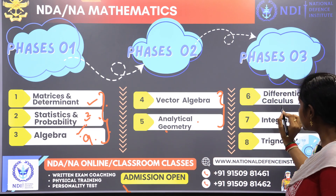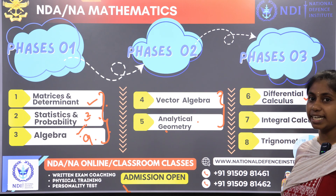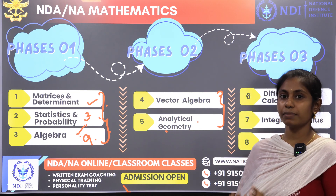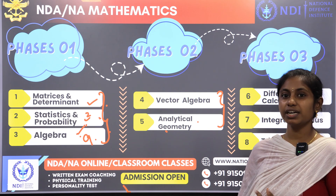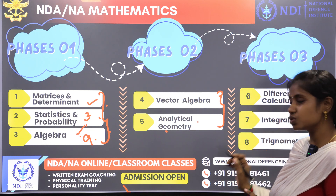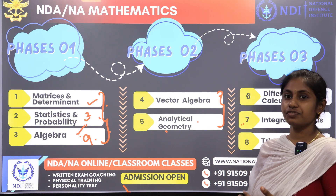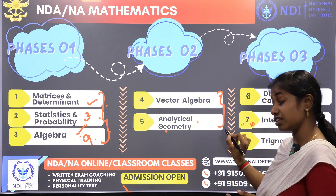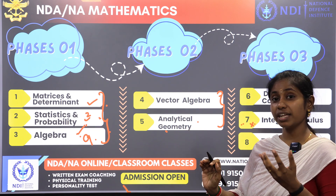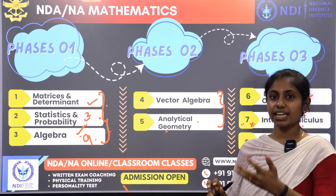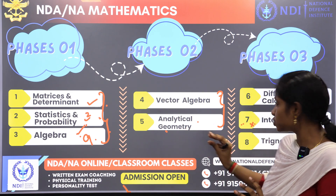Phase three is differential calculus, integral calculus, and trigonometry. Differential calculus is one of the most weighted chapters for both mathematical and non-mathematical background students. Integral calculus is normal — you can choose some sums. However, for non-mathematical background students, there are some hard questions in integral calculus, so it may be better to avoid it unless you put in extra effort. Mathematical background students already know what integral means, so they will get a pick in this chapter.